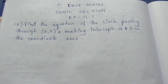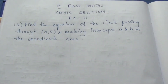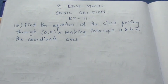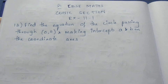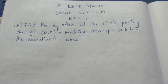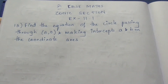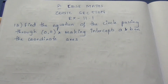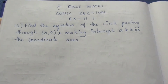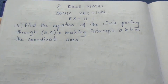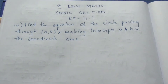Hello viewers, I am Eitli. Today we are going to see CBSE Class 11 section exercise 11.1 question number 13. Let's see the question: Find the equation of a circle passing through (0,0) and making intercepts A and B on the coordinate axis.